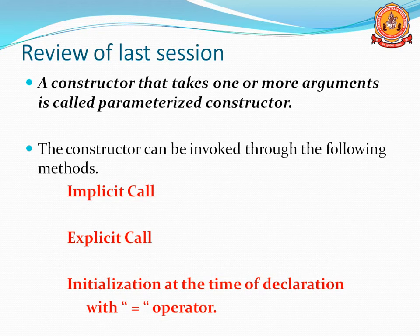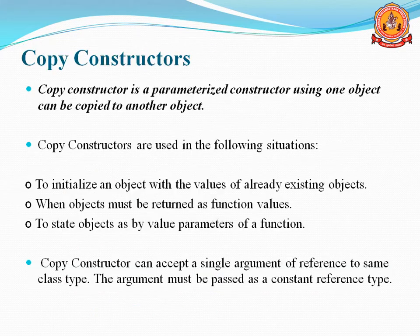Implicit call means along with the object creation, we have to pass the values. In case of explicit, first we have to declare the object, then use the assignment operator equals, then class name, then pass the arguments. One more method is the assignment operator — when declaring the object, use equals and pass the value directly.